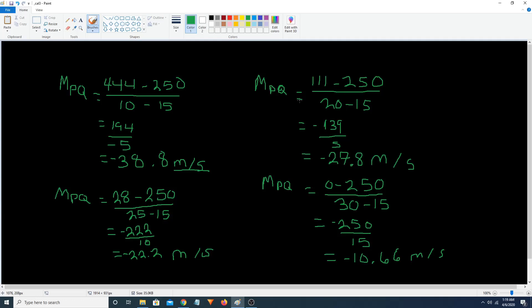And right here we have our other secant length. The slope of the secant length. 111 minus 250 divided by 20 minus 15. Which equals negative 139 divided by 5. Which equals 27.8 meters per second.